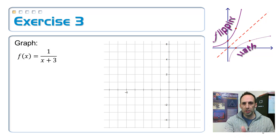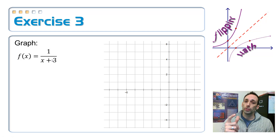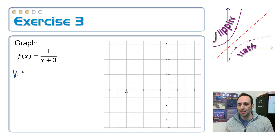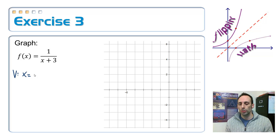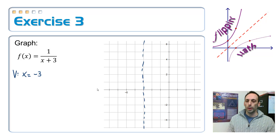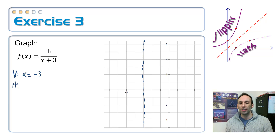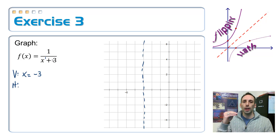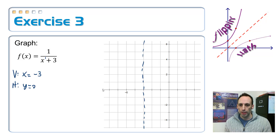Alright, you got your handout with grids printed out. Let's graph some rational functions. Step number one is always to factor — looking at this function, there's nothing to factor, so skip that step. Vertical asymptotes: denominator equal to zero gives x equals negative three. I'll put that on the graph as a dashed line. Now find the horizontal asymptote by comparing degrees: up top I just have the constant one, which is degree zero, and on the bottom I have degree one. The bottom is bigger than the top, so I have a horizontal asymptote at y equals zero — that's the x-axis.